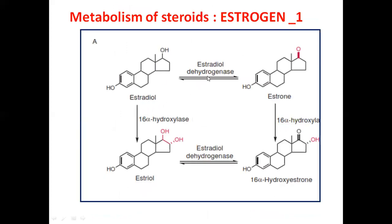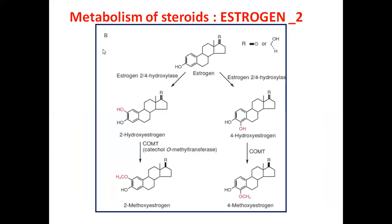Estradiol dehydrogenase acts on estradiol to give estrone. Then 16α-hydroxylase acts at the 16th position — adjacent to the 17th position — to add an OH group, giving three hydroxyl groups total, which is estriol (estrogen triol). Dehydrogenase produces the double bond ketone, and estrone plus 16α-hydroxylase gives the first step of estrogen metabolism.